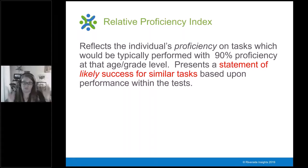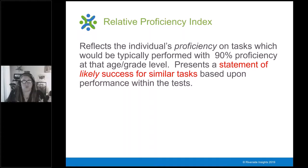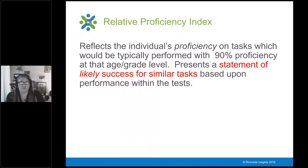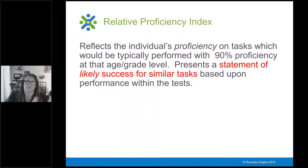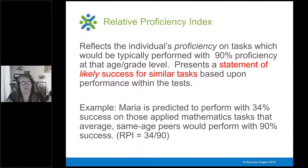A score unique to the Woodcock Johnson family of assessments is the Relative Proficiency Index, and this is a score that doesn't speak just to relative standing — it speaks to proficiency, how well can you actually do this. The Relative Proficiency Index reflects a student's proficiency on tasks that would be typically performed with 90% proficiency at that age or grade. For example, I'm working with Maria and we're doing an applied math test and Maria gets an RPI of 34 over 90.